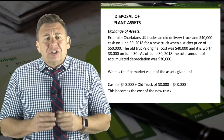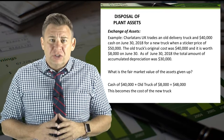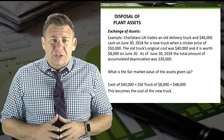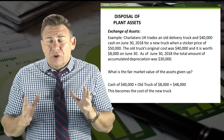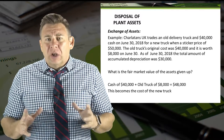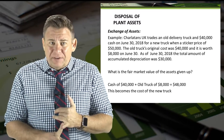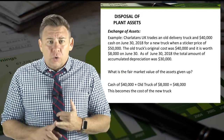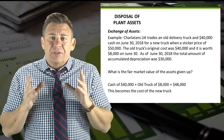Let's look at an example. Charlatans UK trades an old delivery truck and $40,000 cash on June 30, 2018 for a new truck that has a sticker price of $50,000. The old truck's original cost was $40,000, and it is worth $8,000 on June 30. As of June 30, the total amount of accumulated depreciation was $30,000. The fair value of the assets given up is cash of $40,000 plus the old truck worth $8,000, for a total of $48,000. This becomes the cost of the new truck.